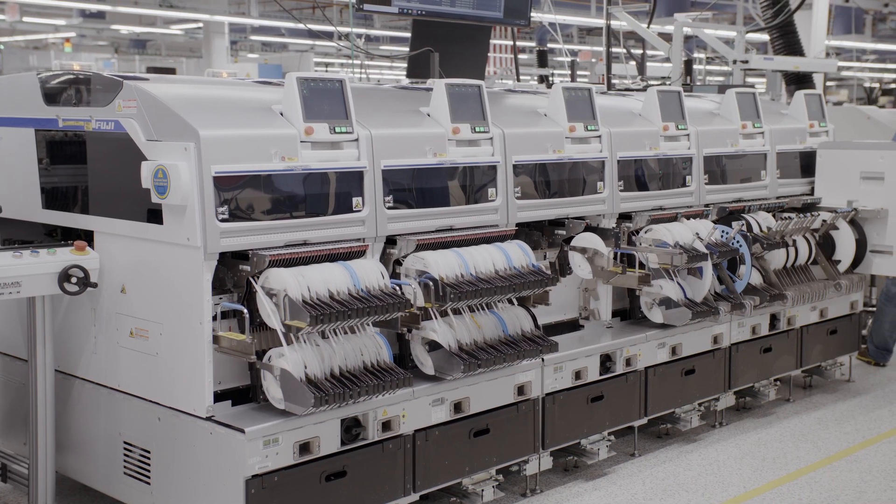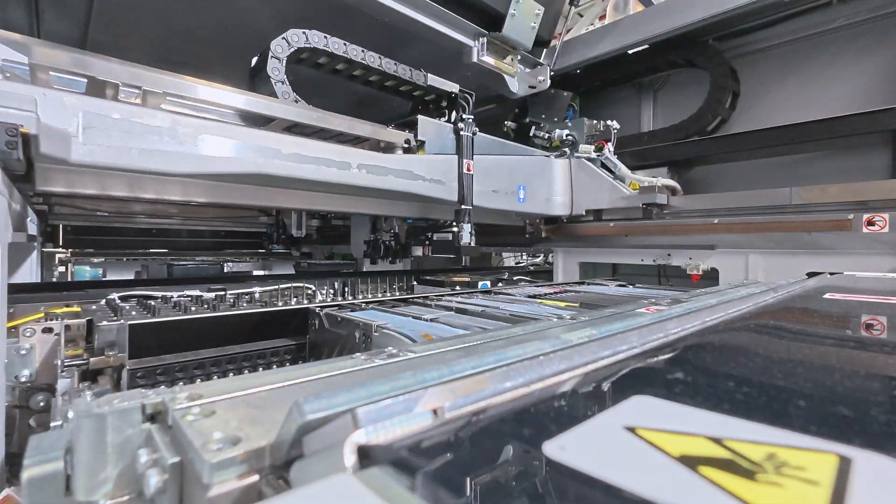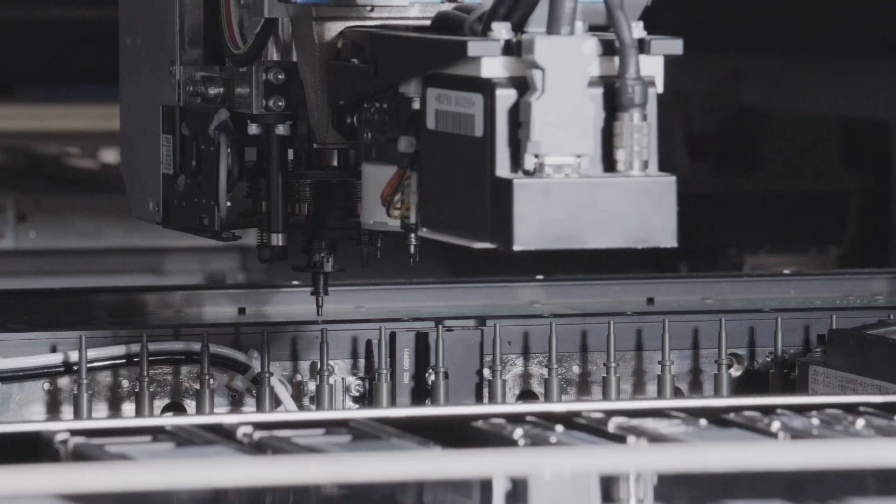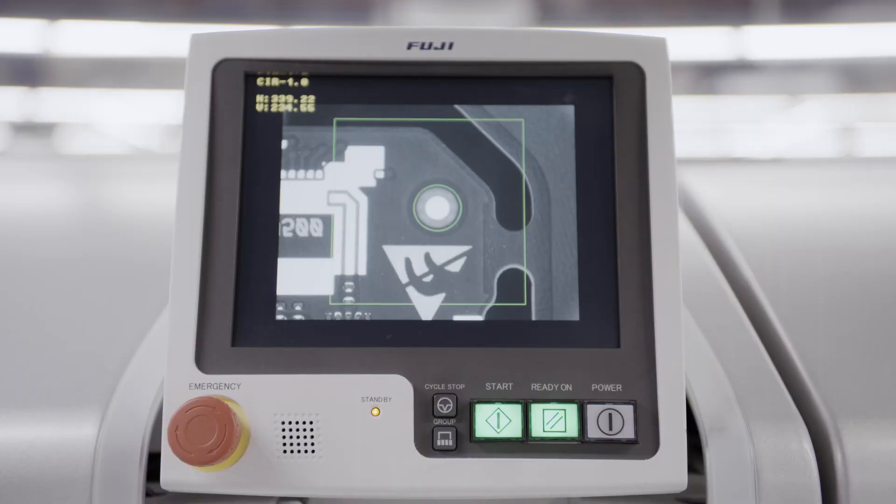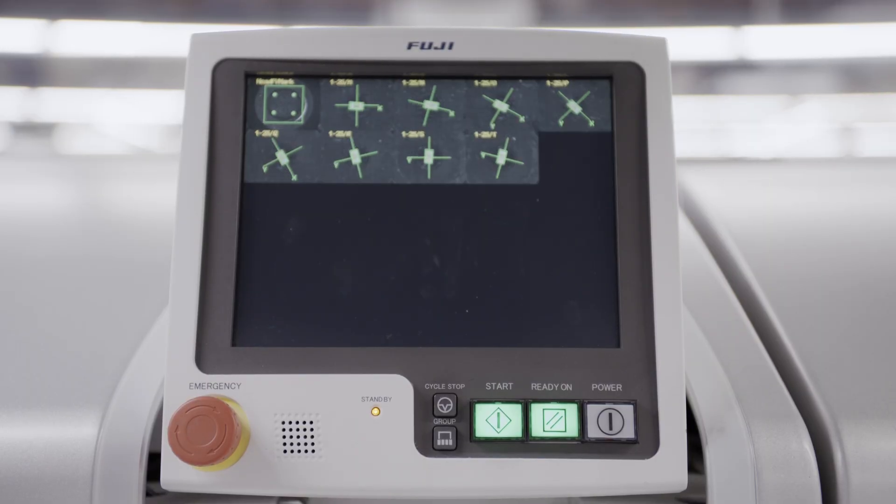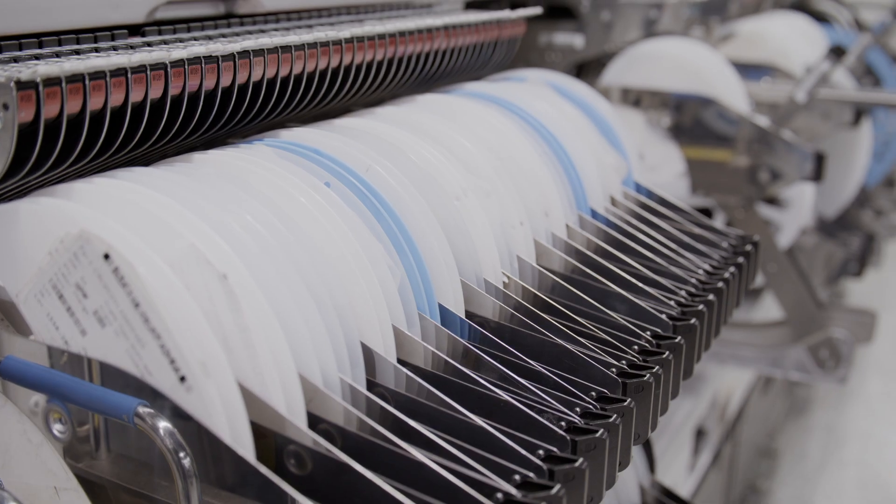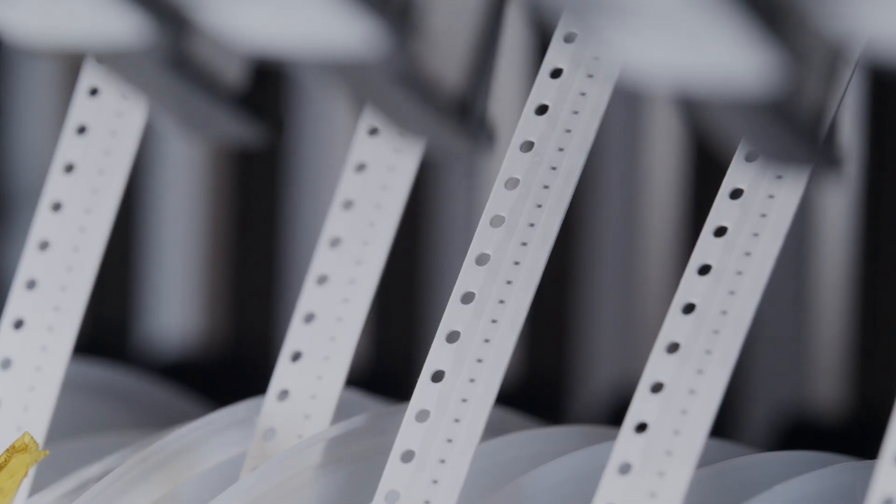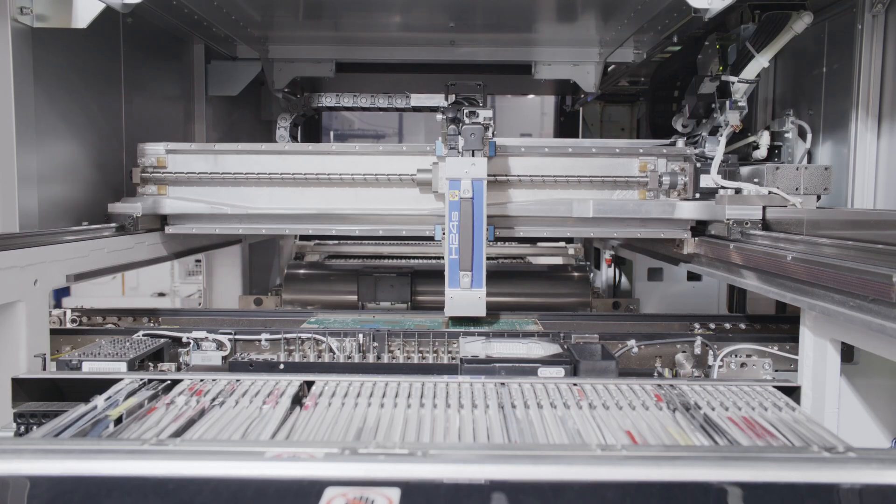Now comes the high-speed part. Robotic heads place thousands of components onto the board, each one fitting precisely where it belongs. These incredible machines can place up to 42,000 components per hour.